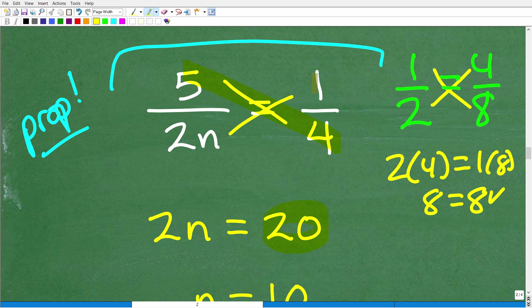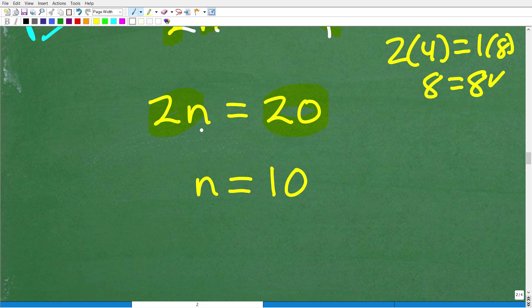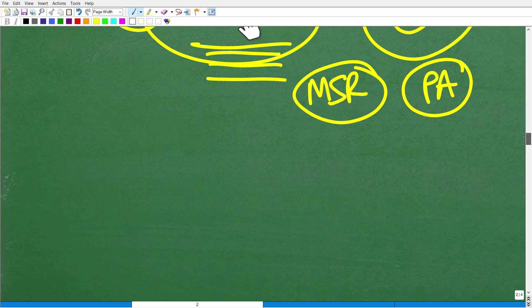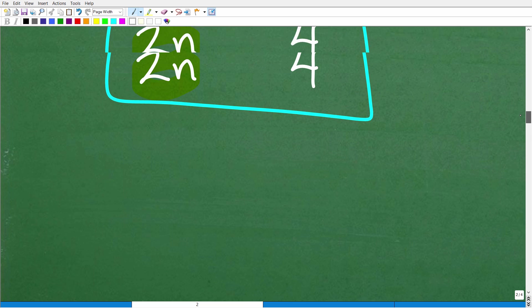All right. So five times four is 20 and one times two N is two N. So now let's go ahead and solve for N and we have two N is equal to 20. All we have to do is divide both sides of this equation by two and we get N is equal to 10.